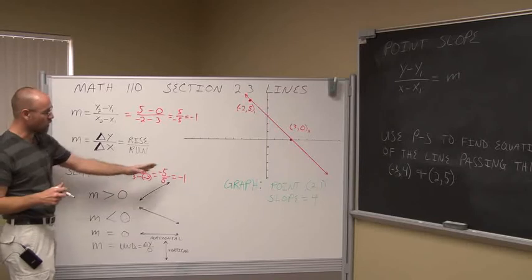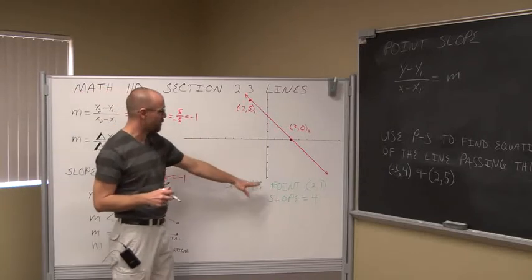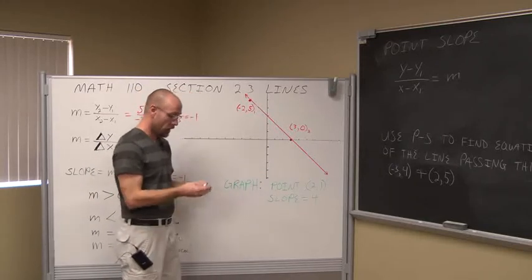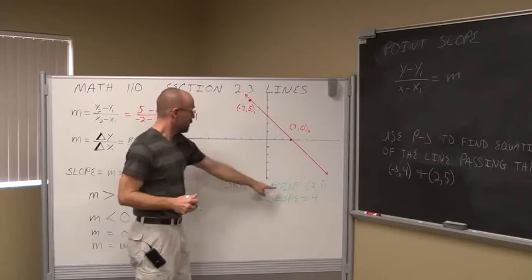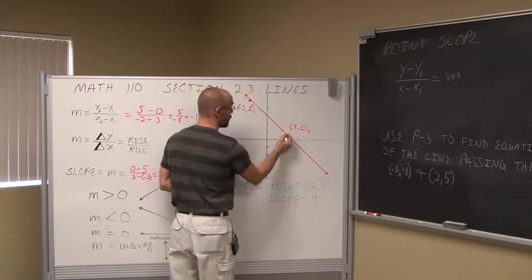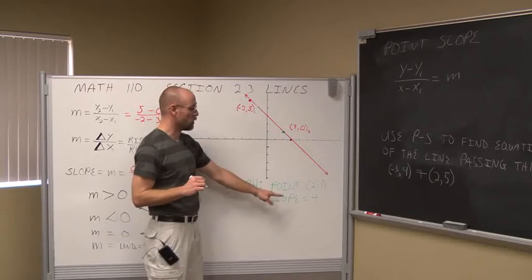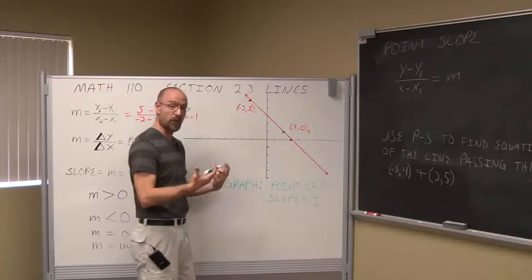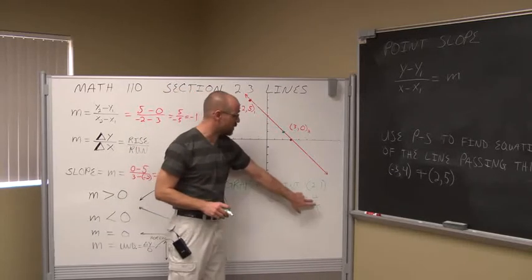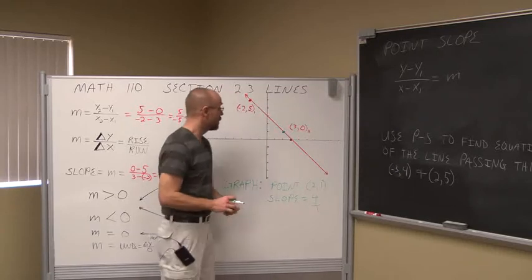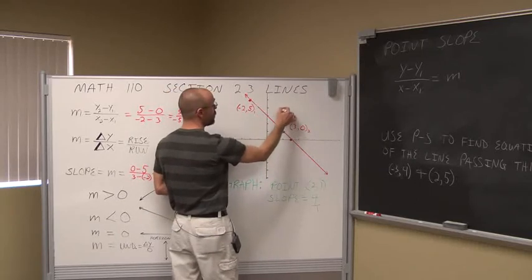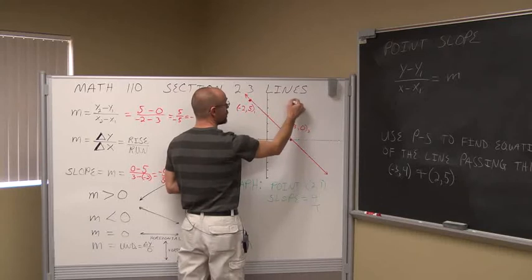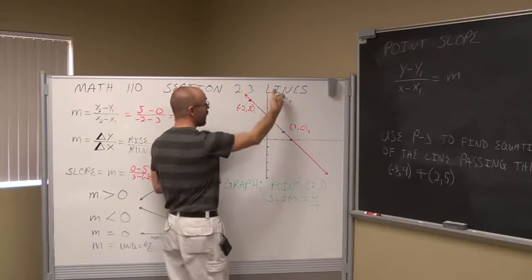Let's talk about graphing lines. Graph the point (2, 1) with a slope of 4. This is all the information I need to graph a line. The slope of 4 can be written as 4 over 1, meaning the change in y is 4 over a change in x of 1. So from the point (2, 1), I go up 4 in y and over 1 to the right in x — that's the next point on my line. Or, since negative 4 over negative 1 also equals positive 4, I could go down 4 and back 1.